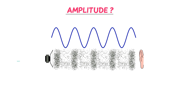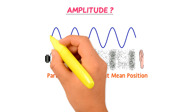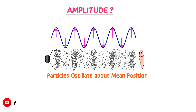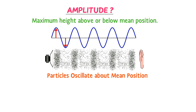Firstly, let me teach you what is amplitude. Consider the sound waves produced by the source. We know from the previous lecture that during wave motion, particles oscillate about their mean position or equilibrium position to produce sound waves. The maximum displacement of the particles either above or below from the mean position is called amplitude. Amplitude is the maximum height above or below from the mean or equilibrium position.